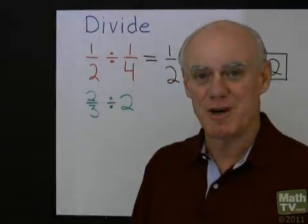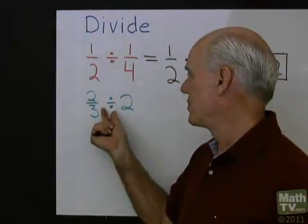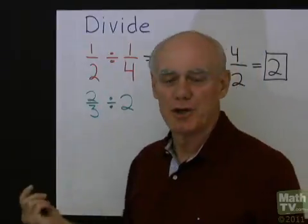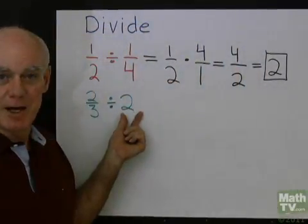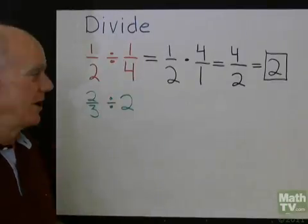Here we have another division problem with fractions. We want to have 2 thirds divided by 2. We're going to do the exact same thing that we've been doing, and that is instead of dividing by 2, we're going to multiply by its reciprocal, which is 1 half.